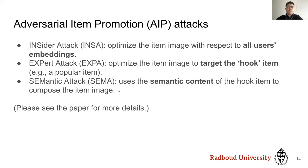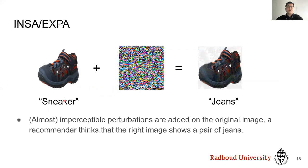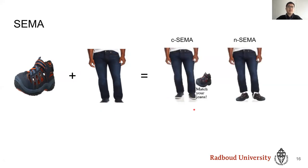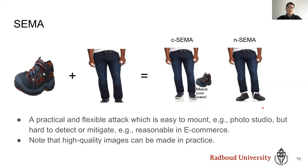So how are item images manipulated by AIP? For INSA and EXPA, perturbations are constructed by optimization. The image on the left is a clean image of a sneaker. The constructed perturbations are shown in the middle, and by adding them together we get the promoted image on the right. The recommender now thinks the promoted image shows a very popular pair of jeans on the platform. For SEMA, we discuss two methods: composition semantic attack (CSEMA), where two items are displayed side by side, and natural semantic attack (NSEMA), where the shoe is pasted onto the foot part of the jeans image. CSEMA images can also be made by photographing the target item with the hook item in a professional photo studio.